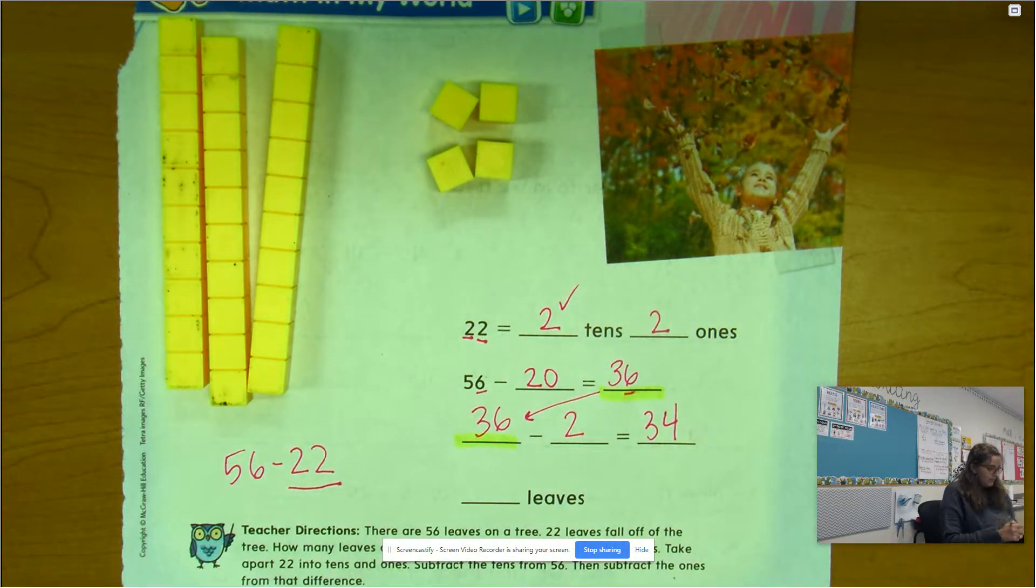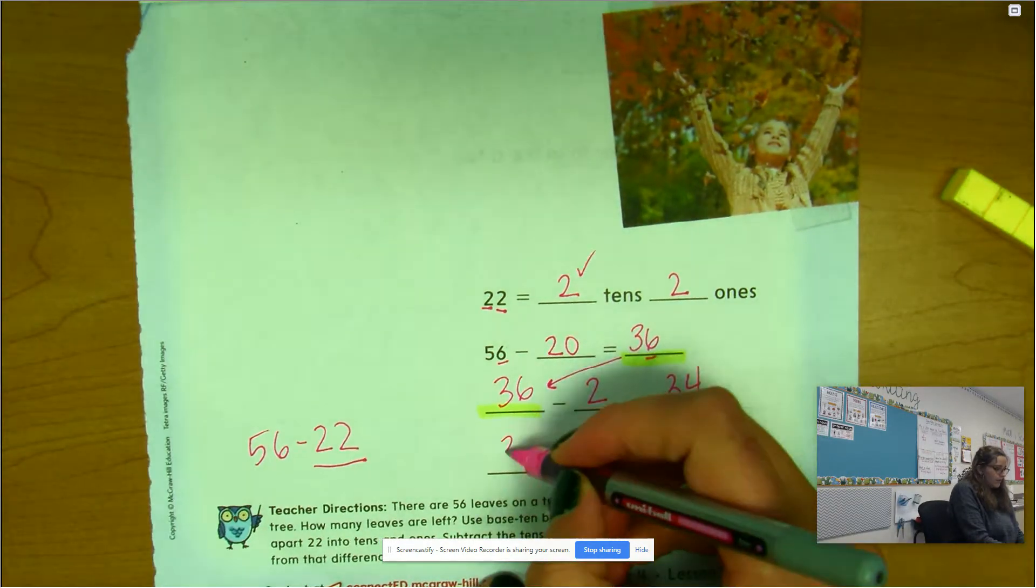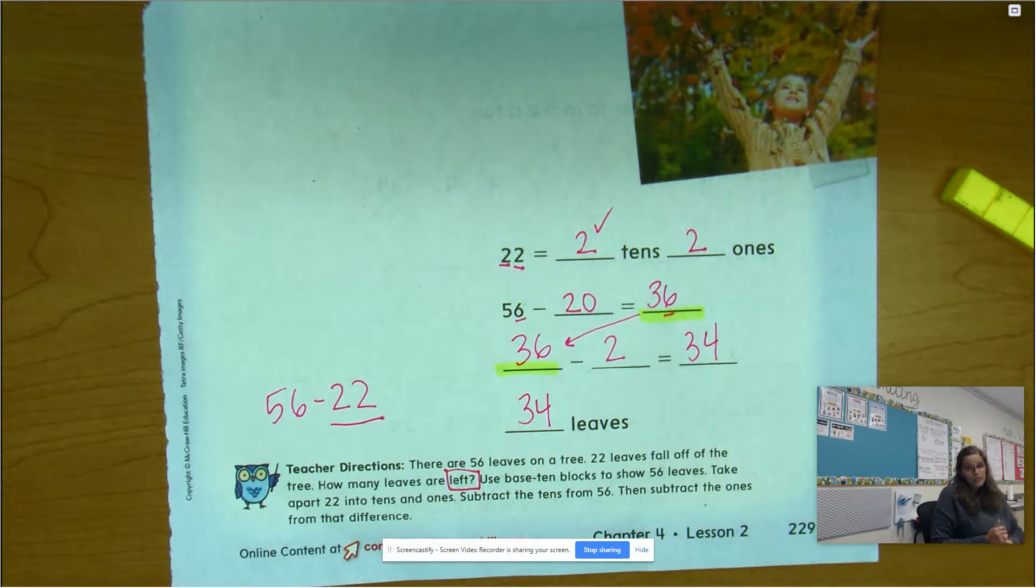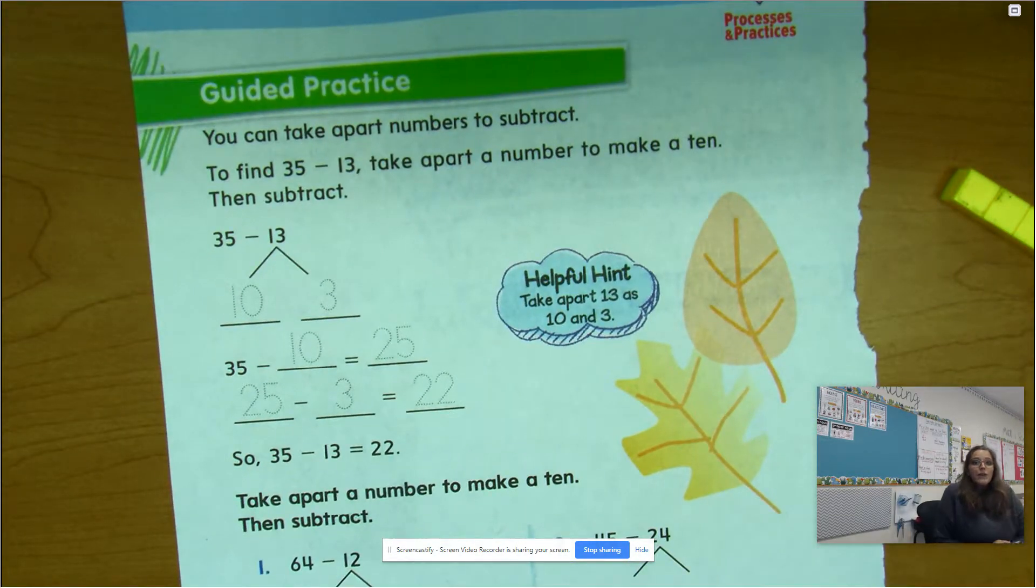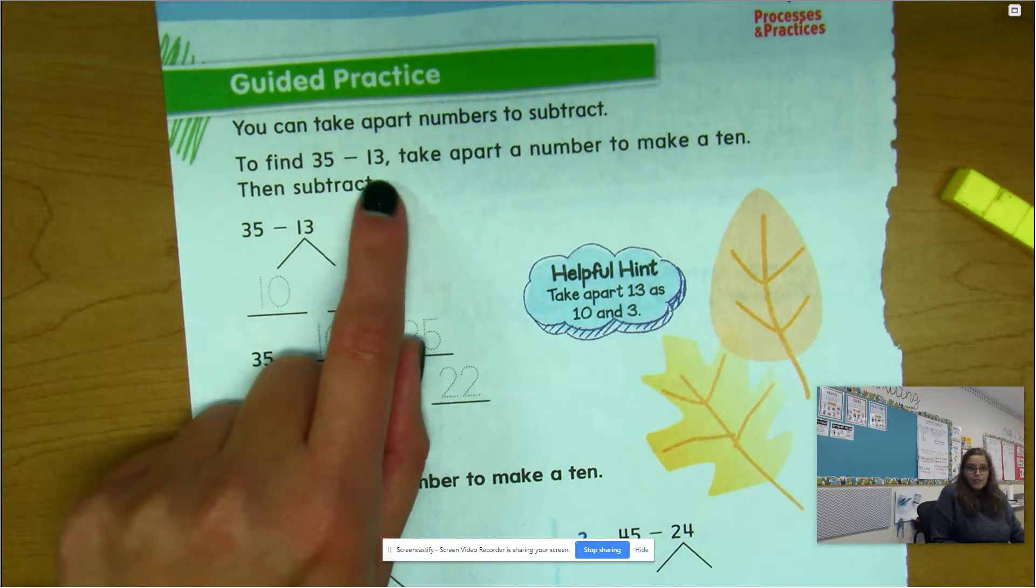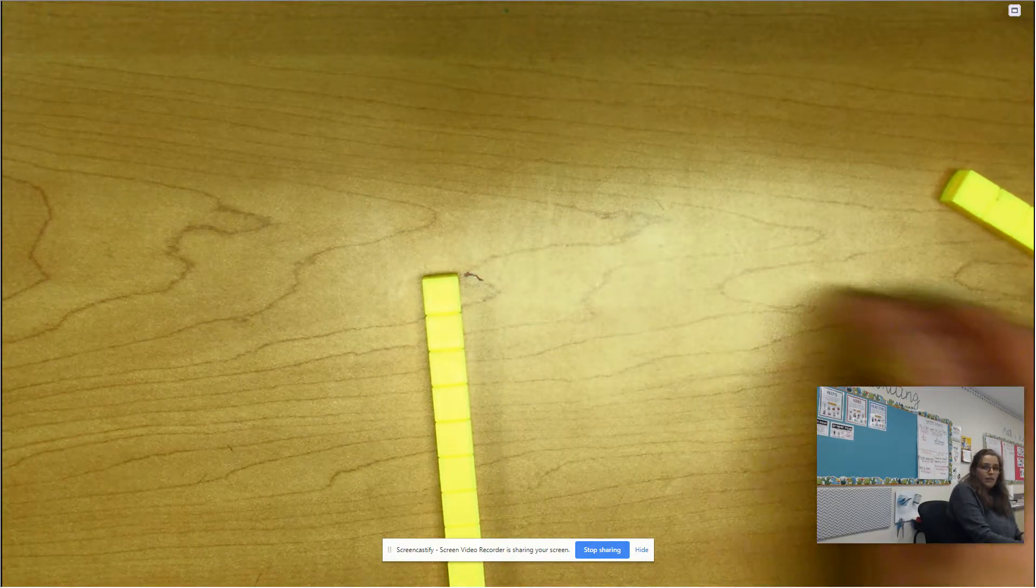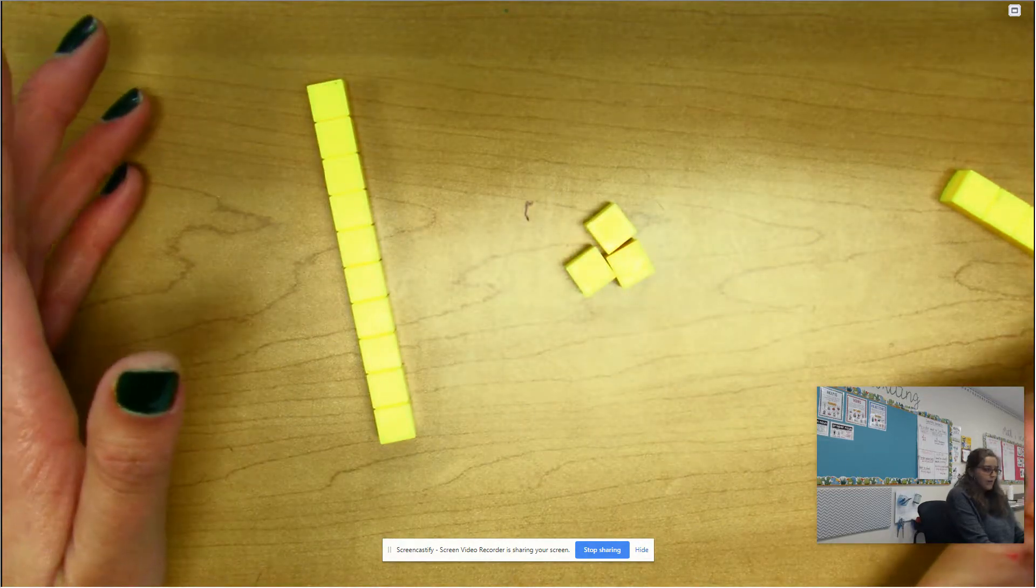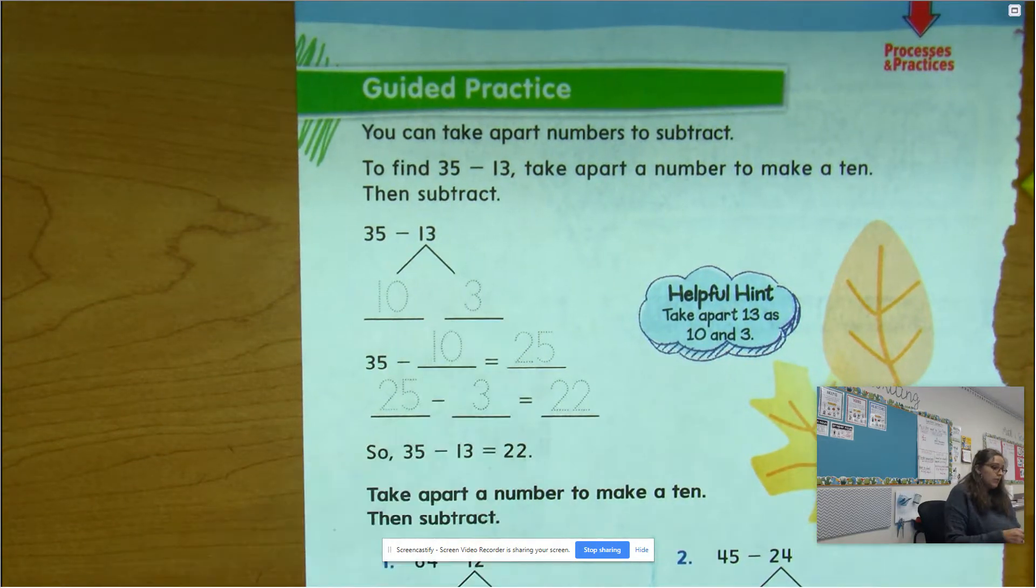Do another one. Flip over to the back. How many leaves do I have left on the tree? 34. Put a box around that word 'left' - we forgot to do that. 'Left' means I'm probably going to be subtracting. Here we go with an example. If we have 35 minus 13, if I split 13 into tens and ones, this is what 13 looks like. I would have one ten and three ones, right? That's exactly what they did. Ten and three is what's equal to 13.